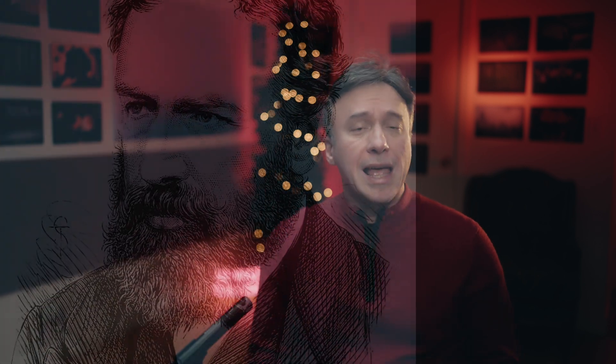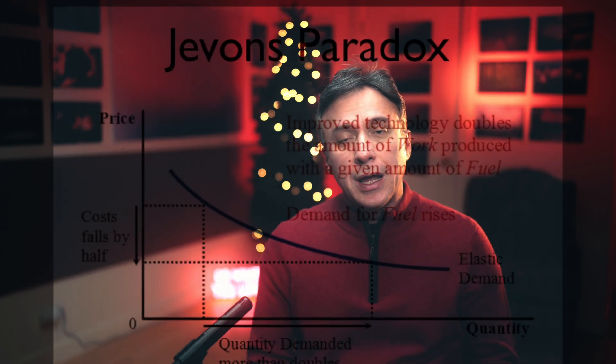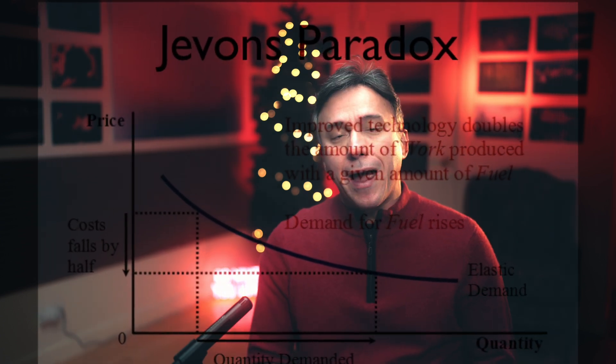Who was William Stanley Jevons? He was a 19th century economist who made some significant contributions to economic theory. Jevons observed that technological improvements that increase the efficiency of resource use can lead to an increase in consumption of that resource — a phenomenon now known as the Jevons paradox.